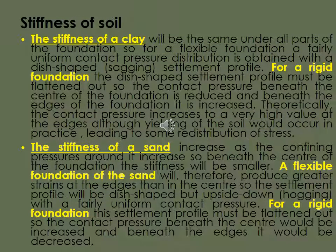Now the stiffness of soil. The stiffness of clay will be the same under all parts of the foundation. So for a flexible foundation, a fairly uniform contact pressure distribution is obtained with a dish shaped sagging or settlement profile. For a rigid foundation, a dish shaped settlement profile must be flattened out. So the contact pressure beneath the center of the foundation is reduced and beneath the edges of the foundation is increased. Theoretically, the contact pressure increases to a very high value at the edges. Although yielding of the soil would occur in practice, leading to some redistribution of stress.